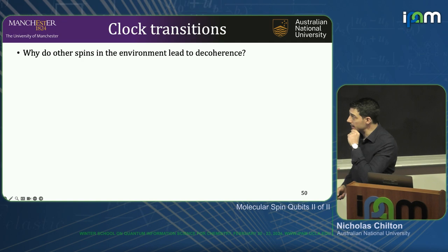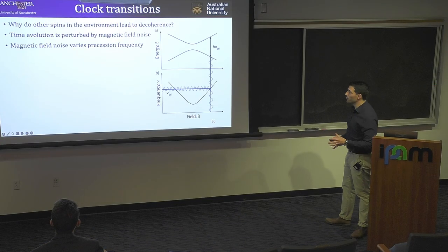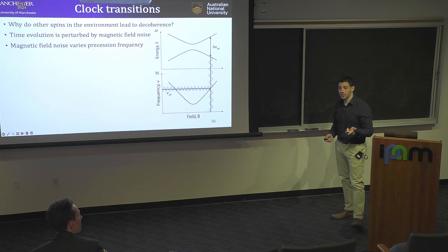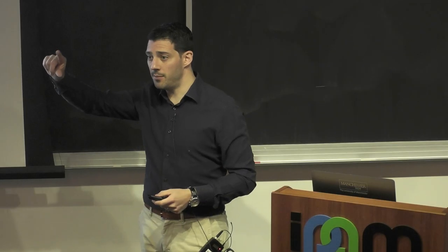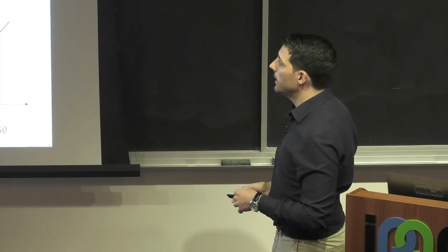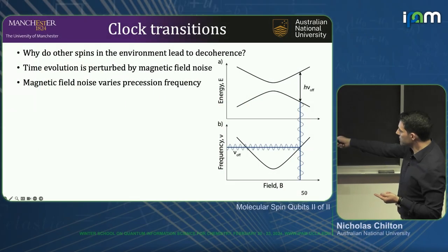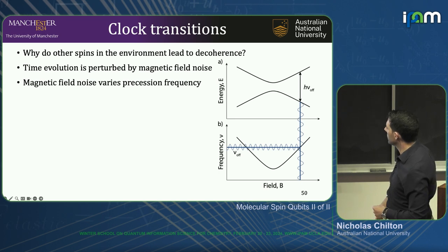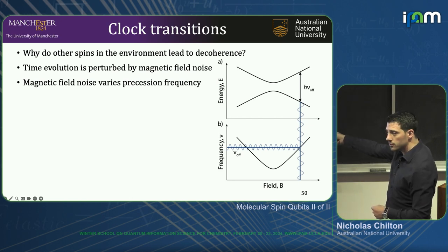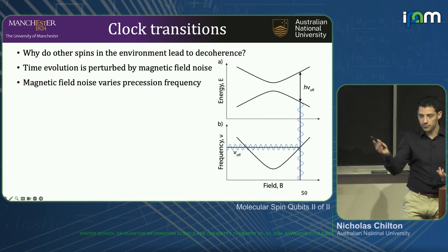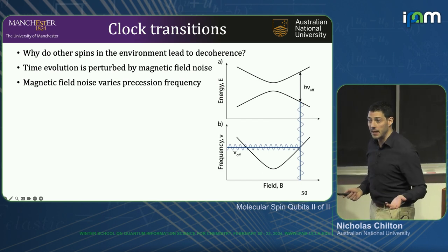Why do other spins in the environment lead to decoherence? The time evolution of your sample — the precession of your electron spins — is perturbed by magnetic field noise. If you have energy states wiggling in time, the relative phase between those states will wiggle in time and screw up what you want to do. In EPR, the transition frequency is linearly dependent on the magnetic field, so wiggles in the magnetic field induce wiggles in transition frequency, messing with the free evolution and therefore causing decoherence.